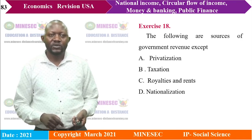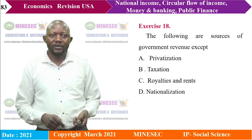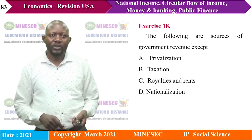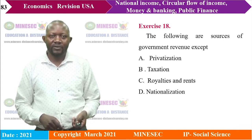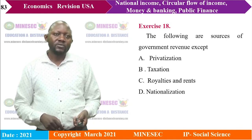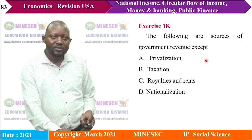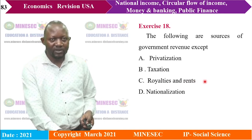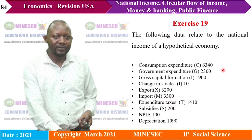Exercise 18: The following are sources of government revenue except: A) privatization, B) taxation, C) royalties and rent, D) nationalization. Privatization, taxation, and royalties are all sources of revenue. Nationalization is not a source of revenue. The right answer is D.